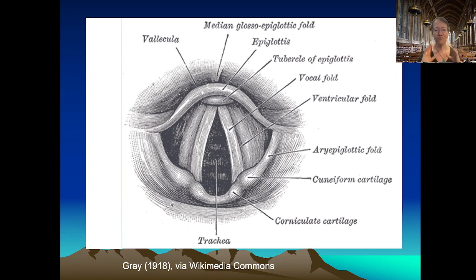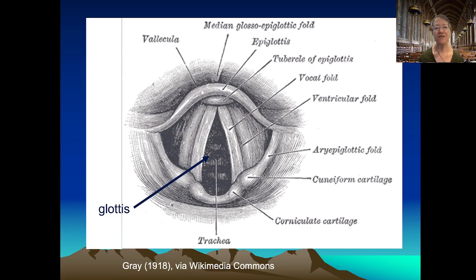We've now rotated and are looking essentially down at that column. In this image we can point to the glottis — generally the combination of the vocal folds and the opening between them constitutes the glottis. This image labels that area as the trachea because that's what's visible through the opening in the vocal folds when you're looking down at this angle.